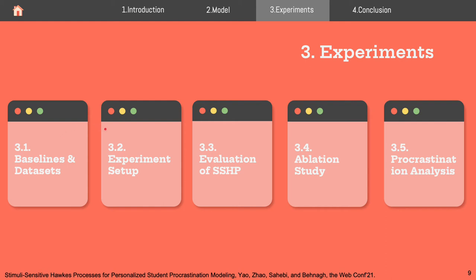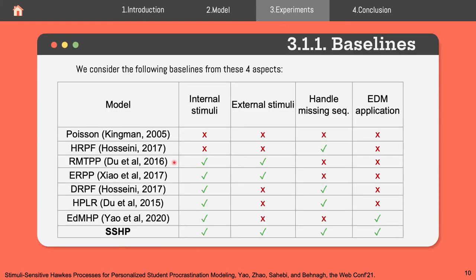In the experiments section, we go over baseline approaches, datasets, and experiment setup, followed by evaluation and an ablation study, ending with procrastination analysis. For baseline approaches, we consider several state-of-the-art point process models, each evaluated on four aspects: whether they can model internal stimuli, capture complex external stimuli, handle missing data, and whether they are used for education applications. Our proposed model is the only one that checks all four boxes.